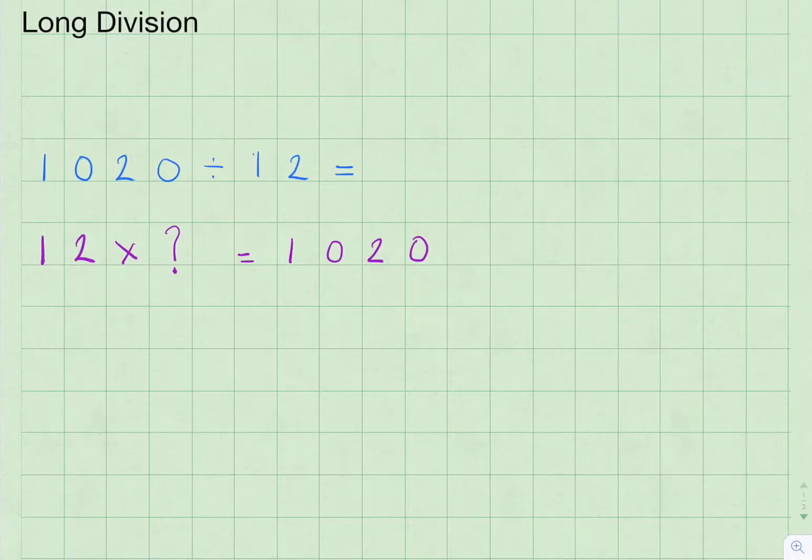In this long division video we're going to look at the sum 1020 divided by 12. Once we've answered this sum correctly we'll also be able to say 12 times the answer equals 1020.